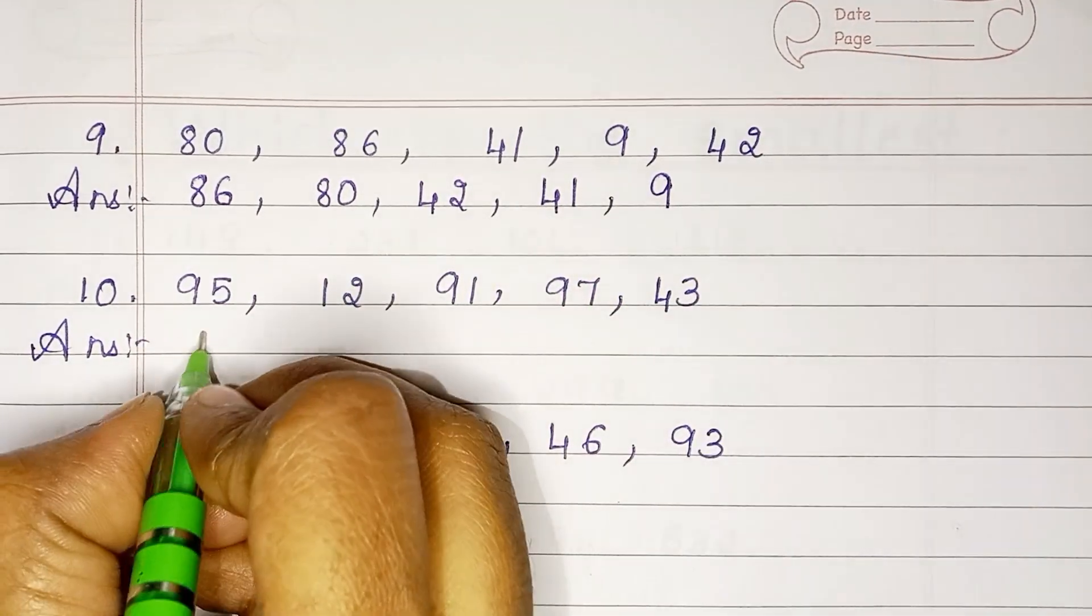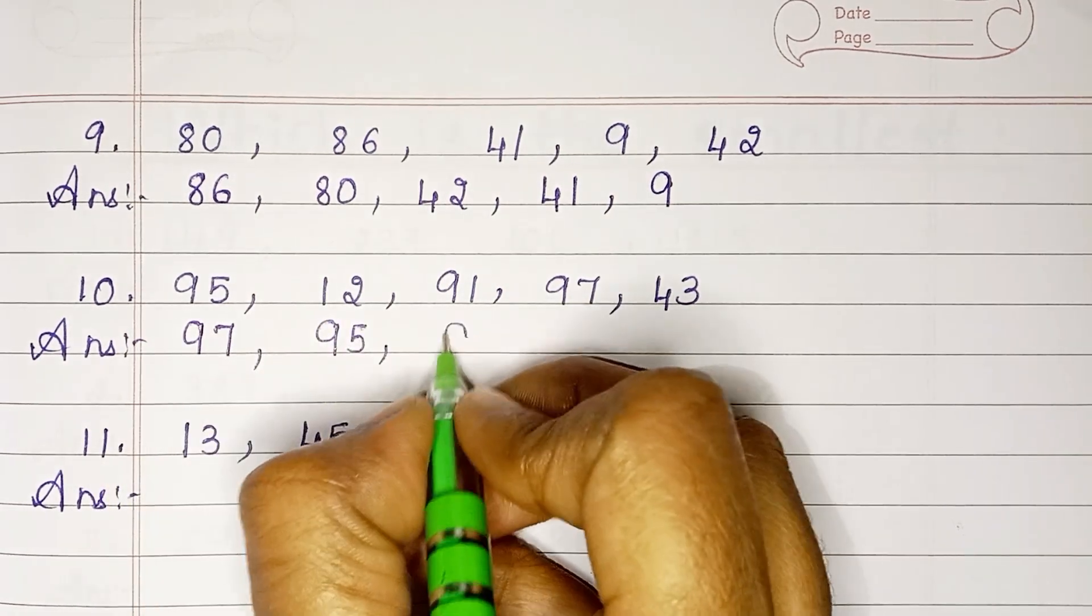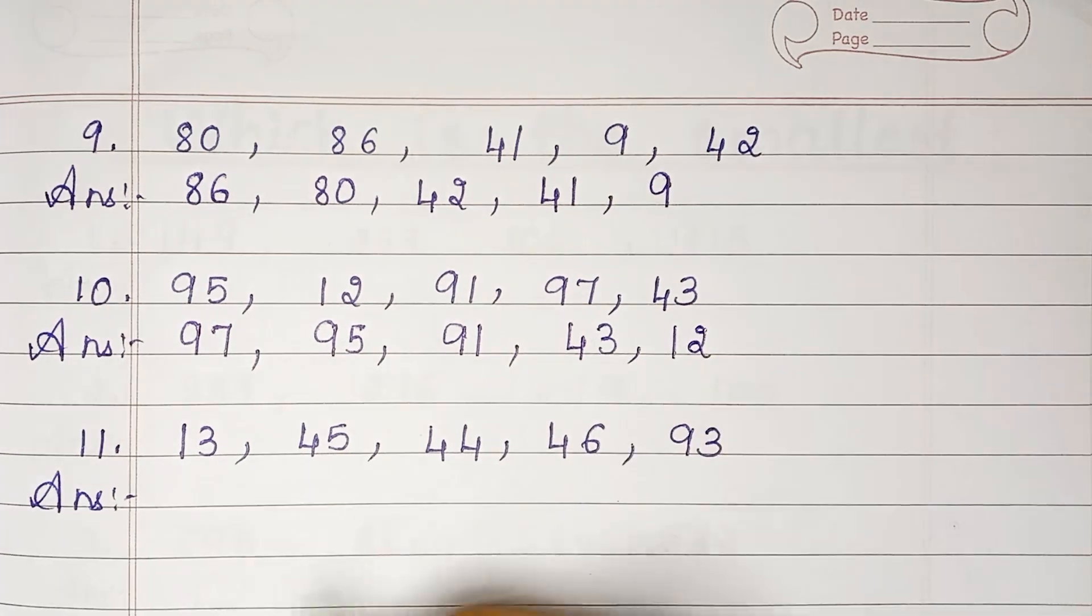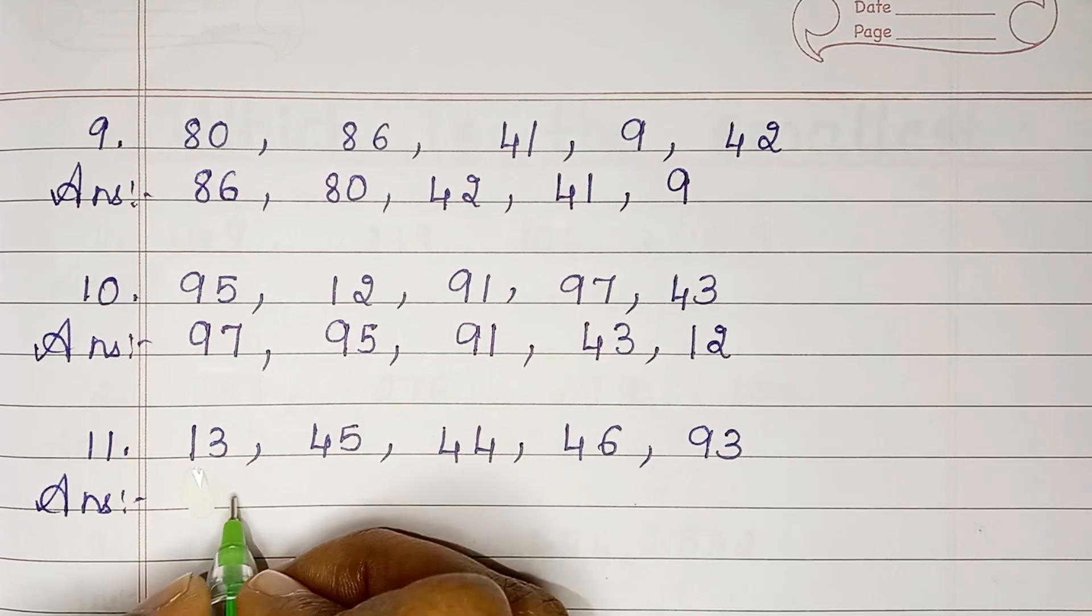Here the numbers are 95, 12, 91, 97, and 43. Let us arrange: 97, 95, 91, 43, and 12.